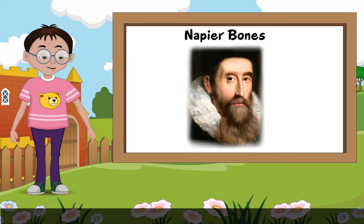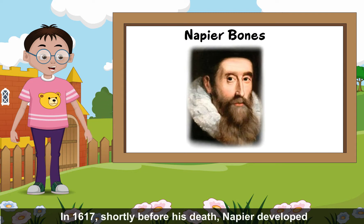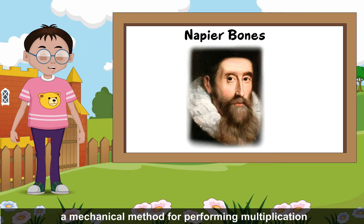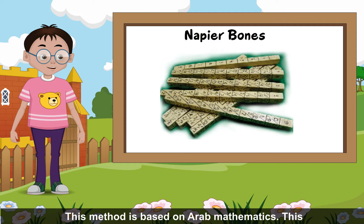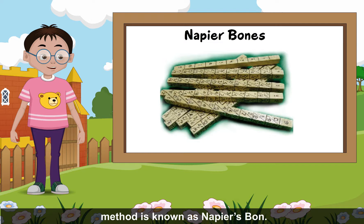Napier's Bones: In 1617, shortly before his death, Napier developed a mechanical method for performing multiplication and division as well as addition and subtraction. This method is based on Arab mathematics and is known as Napier's Bones.